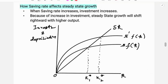At the steady state level of capital, the condition is that investment must be equal to the depreciation rate. When the saving rate increases, investment also increases, because saving is equal to investment — that is an assumption of the Solow model.